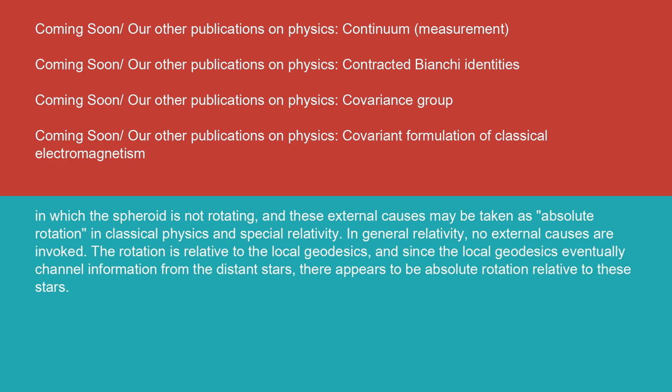In general relativity, no external causes are invoked. The rotation is relative to the local geodesics, and since the local geodesics eventually channel information from the distant stars, there appears to be absolute rotation relative to these stars.